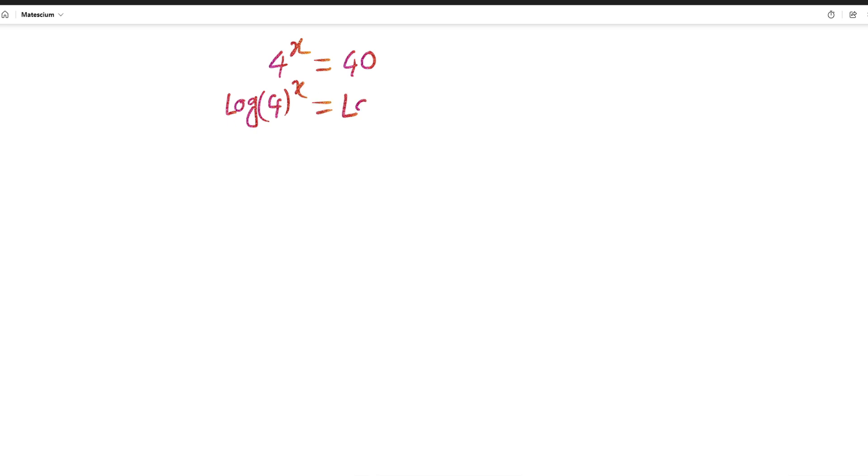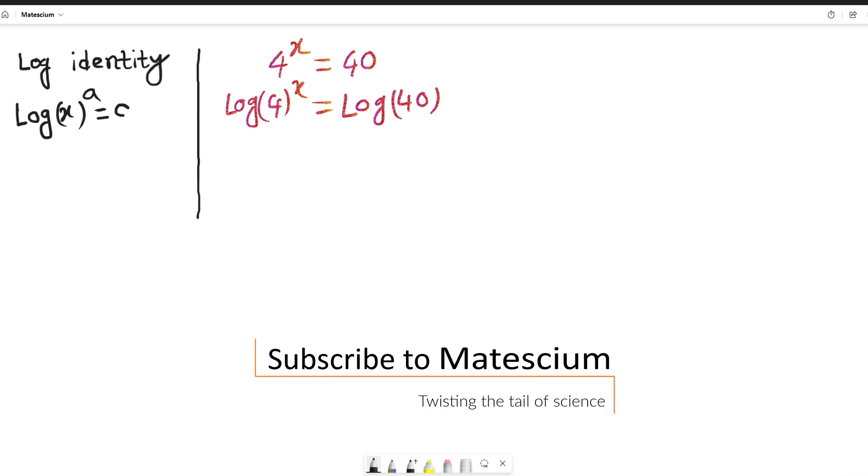Maybe you know from the log identity: if you use the natural log, let's say log of x to the power of a, in that case we can write this power just before the log. That means a log of x. That means log of a to the power x equals a log x.